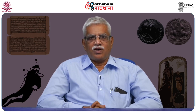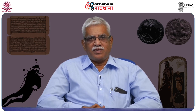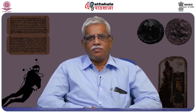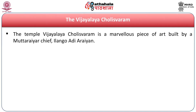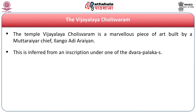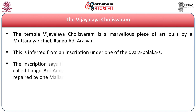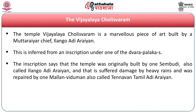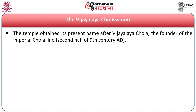The square Vimana of the Koranganatha temple at Srinivasa Nallur has the appearance of being double-storey on account of a cornice at the middle of the height — they introduced a cornice at the middle of the Vimana, making it a Dvitala Vimana. The earliest structural temple of the Cholas is considered to be the Vijayalaya Cholishvaram, because it bears the name of the first Chola king Vijayalaya. However, this temple was not constructed by Vijayalaya himself but was probably built by a subordinate or someone connected to the Muttrayar family. The temple was built by a Muttrayar chief called Ilangu Adhi Arayan, inferred from an inscription under one of the Dvarapalas.